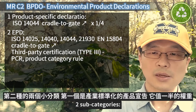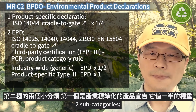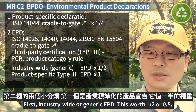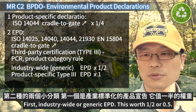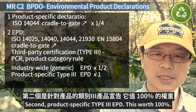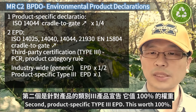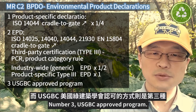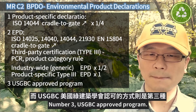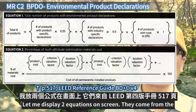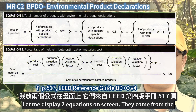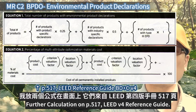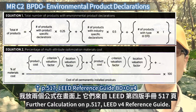Type 3 requires a PCR — Product Category Rule — and several ISO and EN standards. There are two subcategories: first, industry-wide or generic EPD, worth one half (0.5); second, product-specific Type 3 EPD, worth 100%. Number three is the USGBC approved program. Two equations are displayed on screen, from further calculations on page 517 of the LEED Reference Guide.